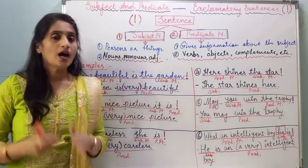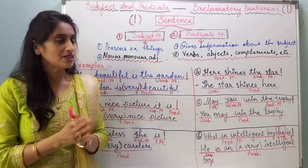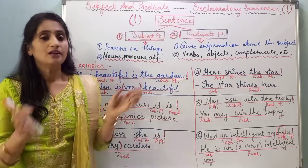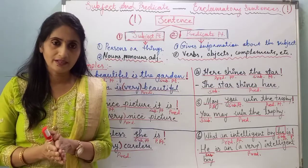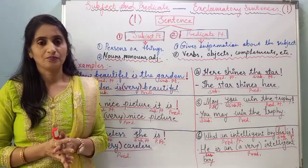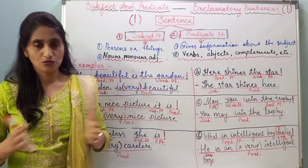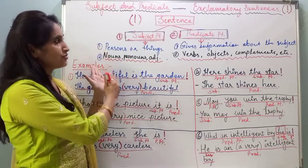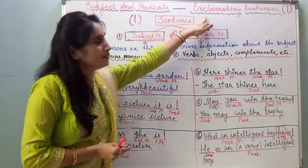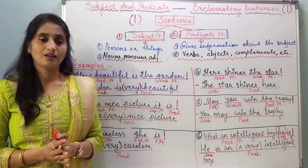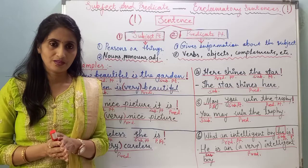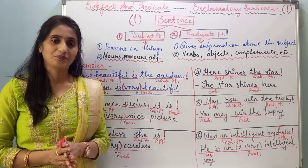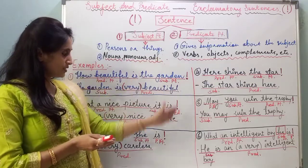How do we identify the subject and predicate in exclamatory sentences? Like declarative sentences, these sentences do not begin with the subject. We have a very simple way: we just have to convert the exclamatory sentences into declarative sentences.